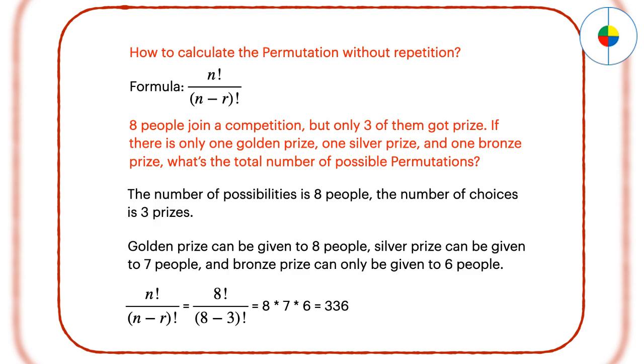There are two ways to think about this. Firstly, you can think of giving the prizes by order. When giving the golden prize, there are 8 possibilities. When giving the silver prize, because 1 has already got a prize, there are only 7 possibilities left. When giving the bronze prize, the remaining possibilities are only 6. So you multiply 8, 7, and 6. That would be the answer for the permutation.